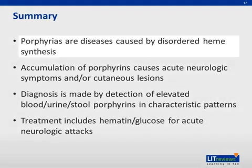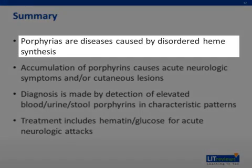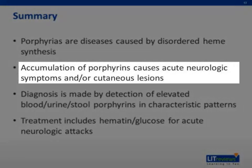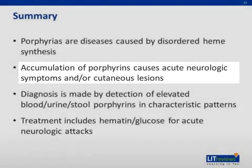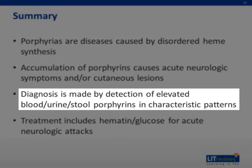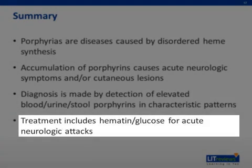In summary, the porphyrias are comprised of eight individual diseases caused by disorders in heme synthesis. Usually these are caused by mutations in the enzymes needed to metabolize ALA and PBG into heme, resulting in the buildup of various intermediate metabolites that have a variety of physiologic effects. Diagnosis is made through documentation of these metabolites, and treatment can involve hematin and other supportive measures, as well as avoidance of provocation of attacks.